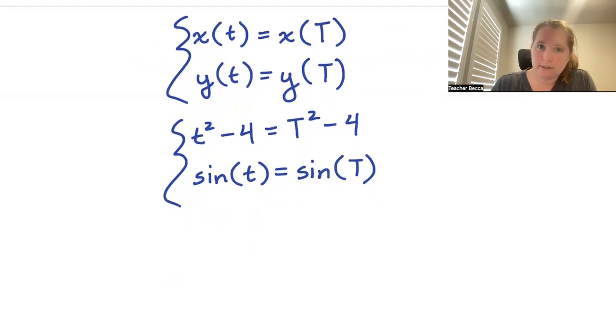So x(t), or sorry, t² - 4 equaling T² - 4 tells us that t² equals T², so that means t is plus or minus T. We want different times, and so our t must be negative T.